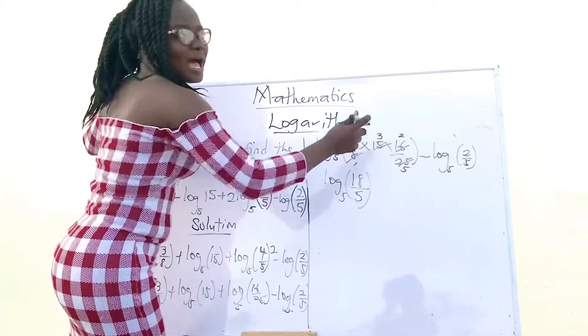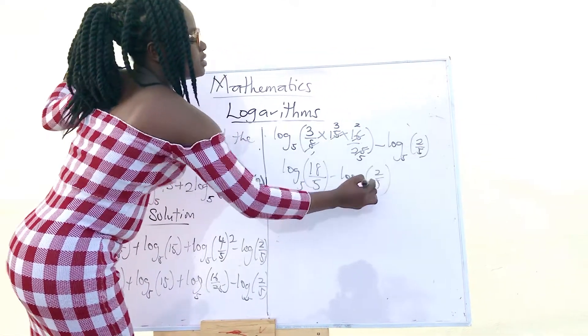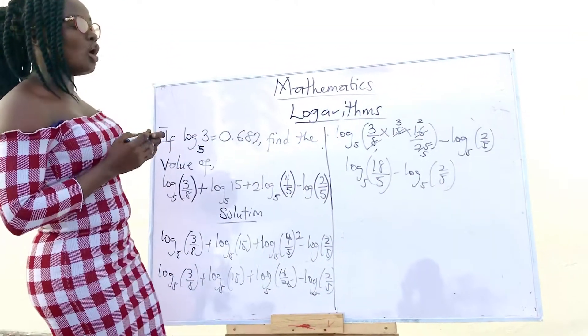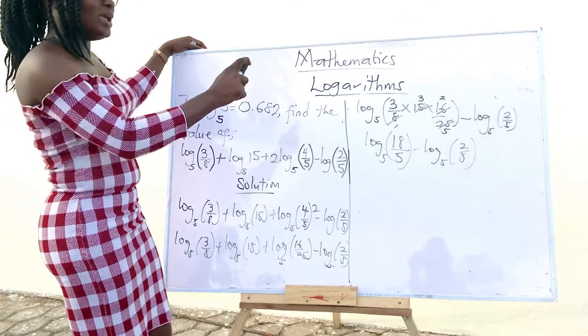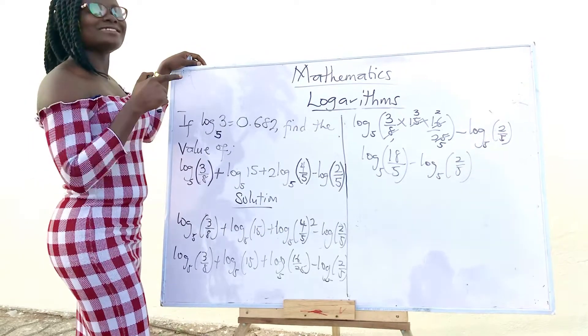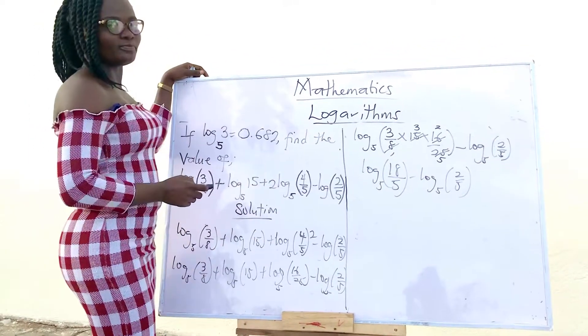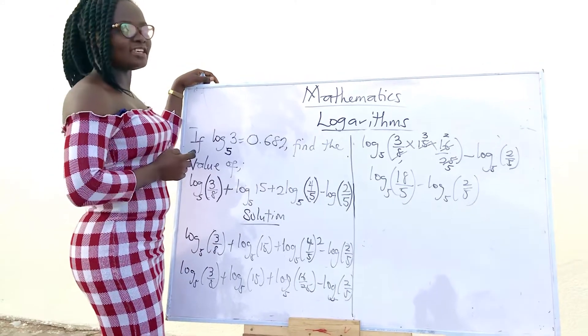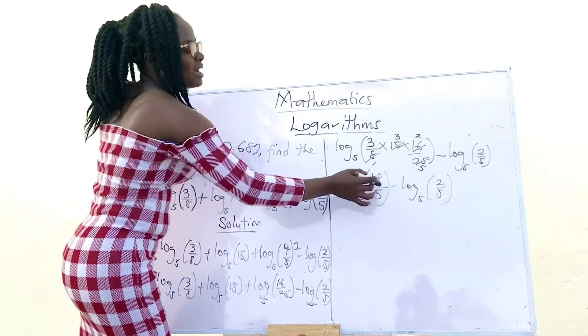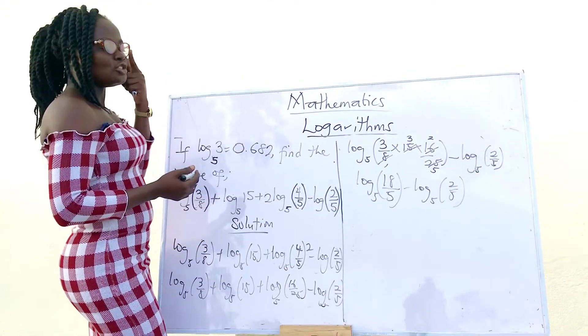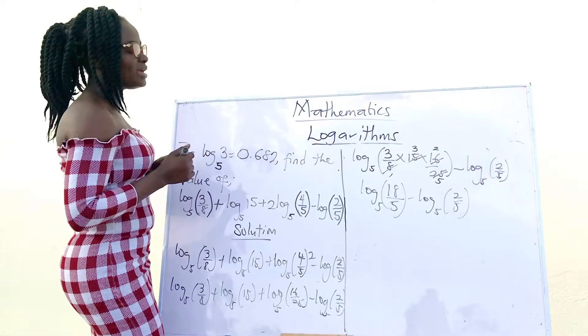Minus we have a minus here, log 2/5 base 5. We can apply the second law also here to solve the section. The second law is saying that if they are the same base and they are subtracting, what do we do? We divide them. So, you pick one of the logs and divide the numbers.